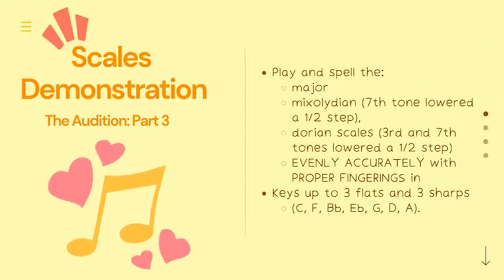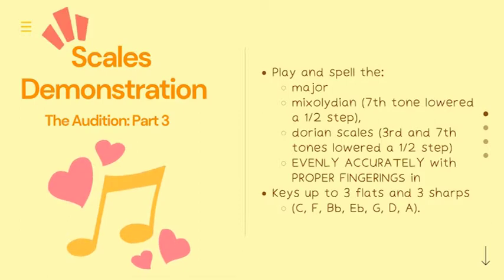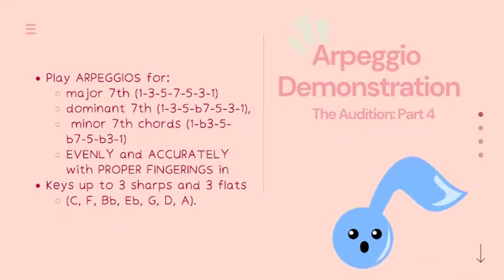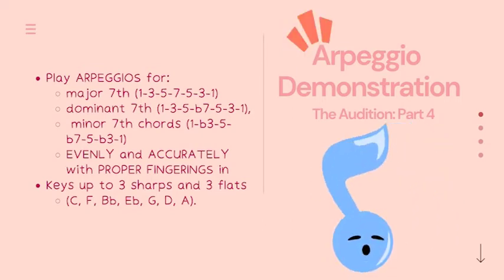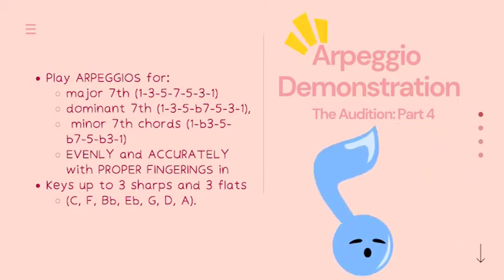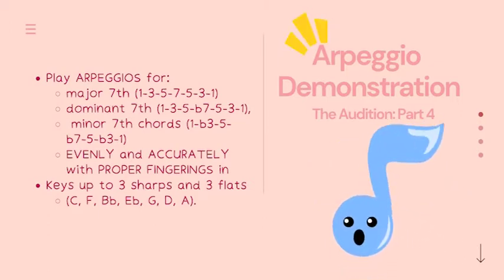Audition Part 3. Audition Part 4 - The arpeggio demonstration: Play arpeggios for major 7th, dominant 7th, and minor 7th chords, evenly and accurately with proper fingerings, in keys up to 3 sharps and 3 flats.